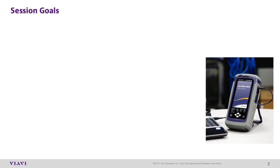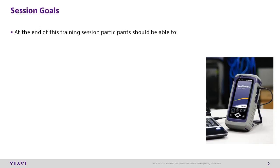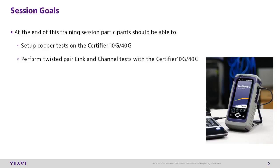By the end of this training session, you will be able to set up copper tests on the certifier, perform a twisted pair permanent link and channel tests, and navigate and interpret test results on the instrument.